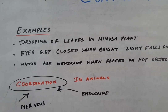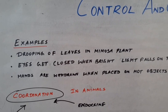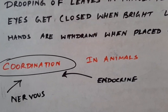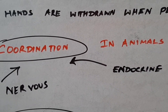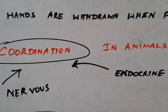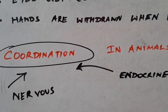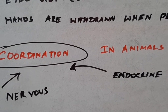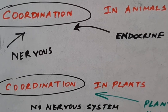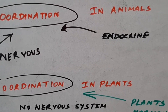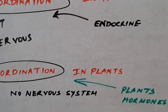Coordination is seen in animals in two ways — animals have both a nervous system and an endocrine system, which work together and are known as the neuroendocrine system. But plants do not have any nervous system, so they coordinate with the environment through hormones, which are biological chemicals also called phytohormones.